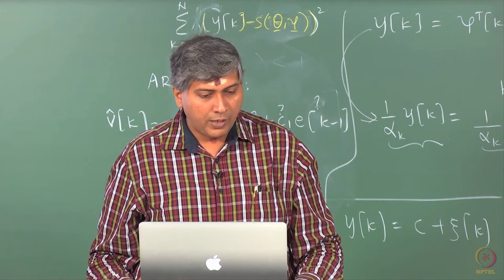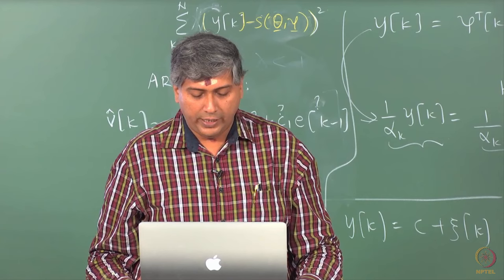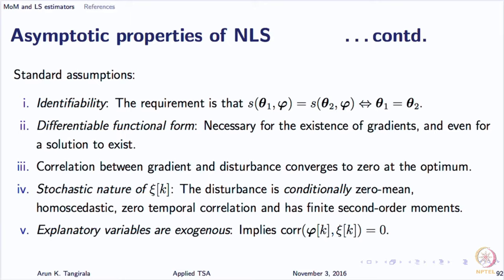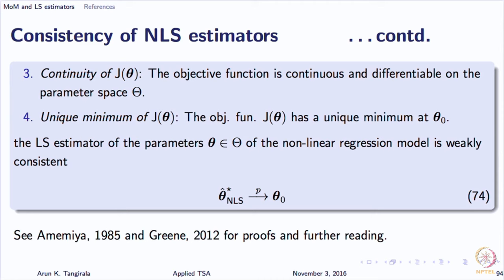There are certain standard conditions. The most important thing is that the regressors should be uncorrelated with the residuals — that also applies here. Under several conditions — mostly demanding that the objective function be continuous and that there exists a unique minimum — theta-hat-star will converge to that unique minimum as n goes to infinity, provided that whatever you have left out is not correlated with what you have included.